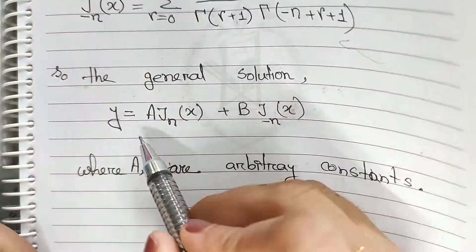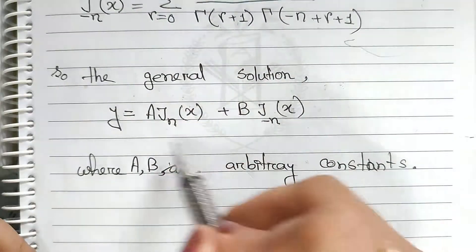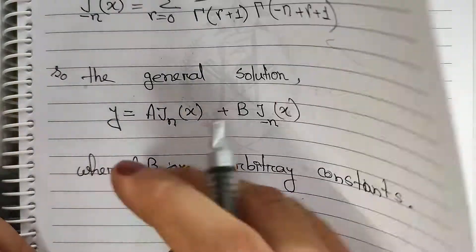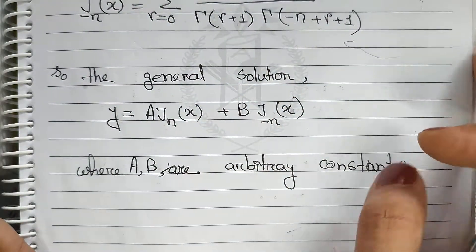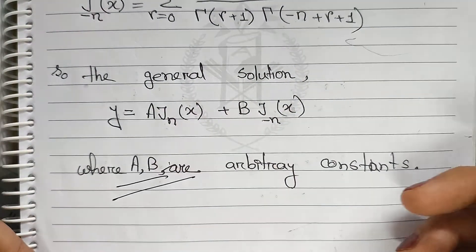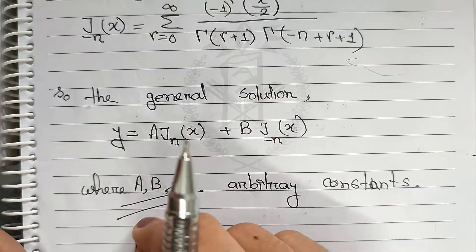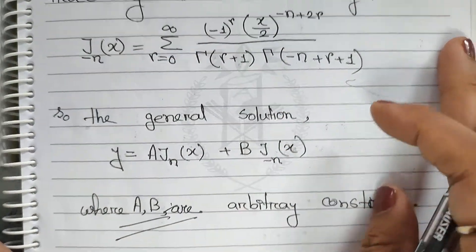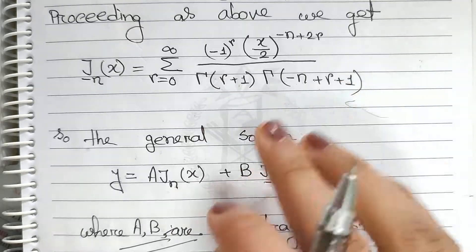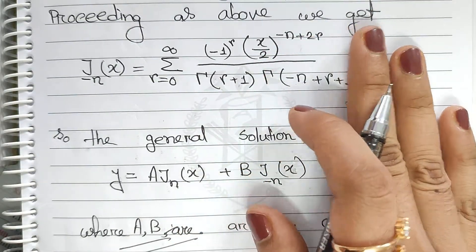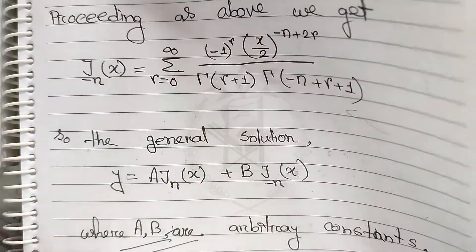So the general solution is y equal to a·Jₙ(x) plus b·J₋ₙ(x). This is the general solution of the Bessel function differential equation. This involves arbitrary constants. The constants are a and b. The important thing — you can see the important result in this chapter — is this arbitrary constant general solution. Thank you.